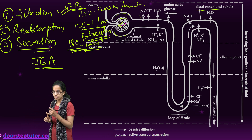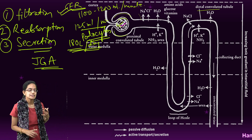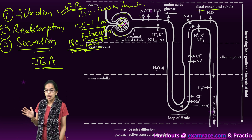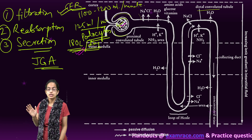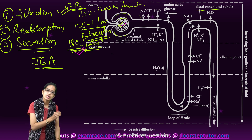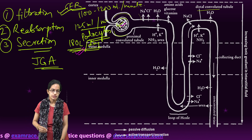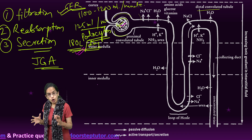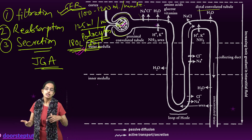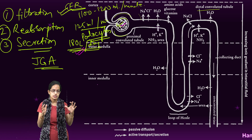The next process is reabsorption. There are 180 liters of blood filtered daily by the glomerulus; however, the urine that passes out is just 1.5 liters. So there is a lot of reabsorption that occurs, and this reabsorption occurs through the renal tubules.